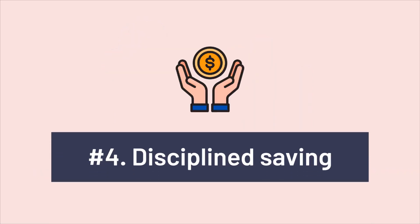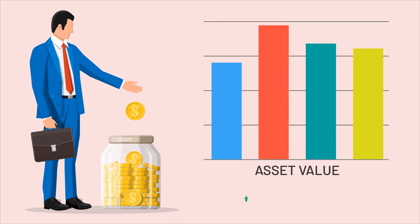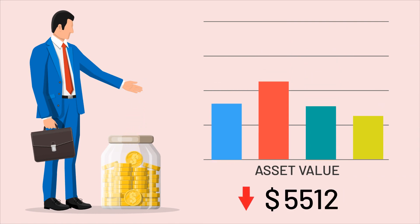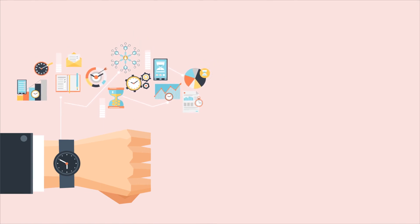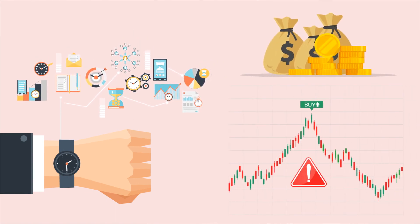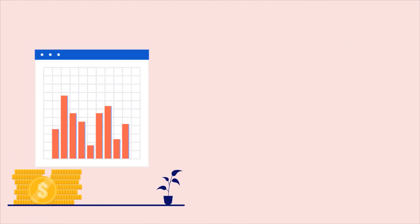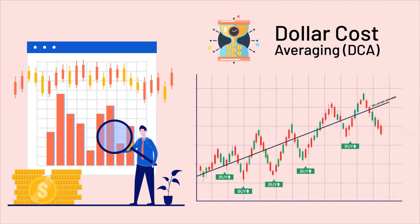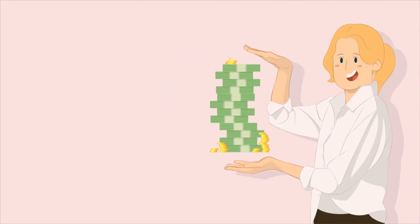Fourth: discipline saving. The strategy of adding money regularly to an investment account allows disciplined saving as the portfolio balance increases, even when its present assets are depreciating. However, a prolonged market decline can be detrimental to the portfolio. Fifth: prevents bad timing. Market timing is not a pure science that many investors — even professional ones — can master. Investing a lump sum at the wrong time can be risky and adversely affect a portfolio's value significantly.